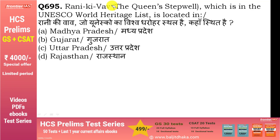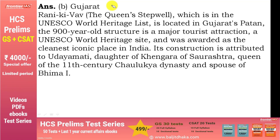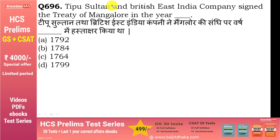Rani ki Vav (the Queen's Step Well), which is in the UNESCO World Heritage List, is located in — option B, Gujarat. Gujarat के Patan के अंदर स्थित है, 900 साल पुराना structure है और major tourist attraction है. इसे बनवाया था उदयमती ने, जो Saurashtra के Khangara की बेटी थीं और 11th century की Solanki dynasty के king Bhima I की queen थीं.